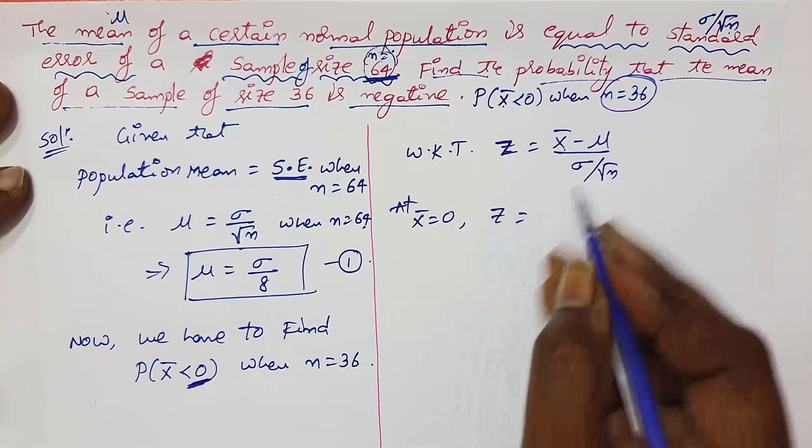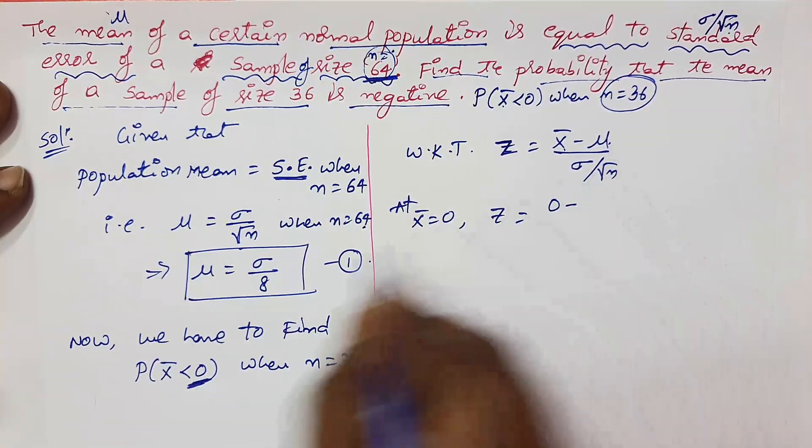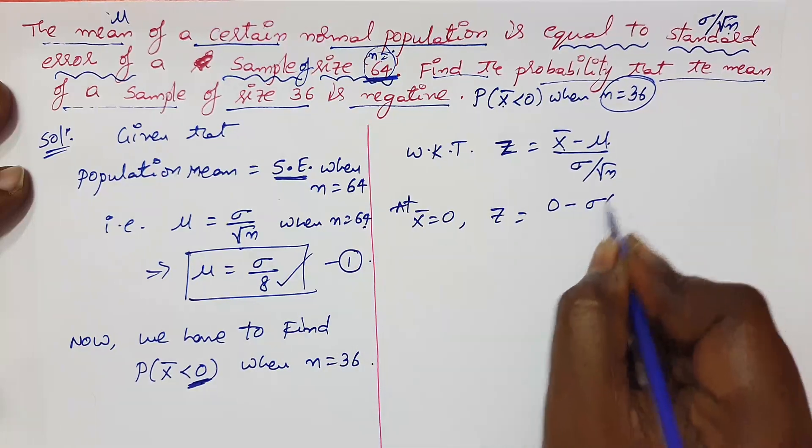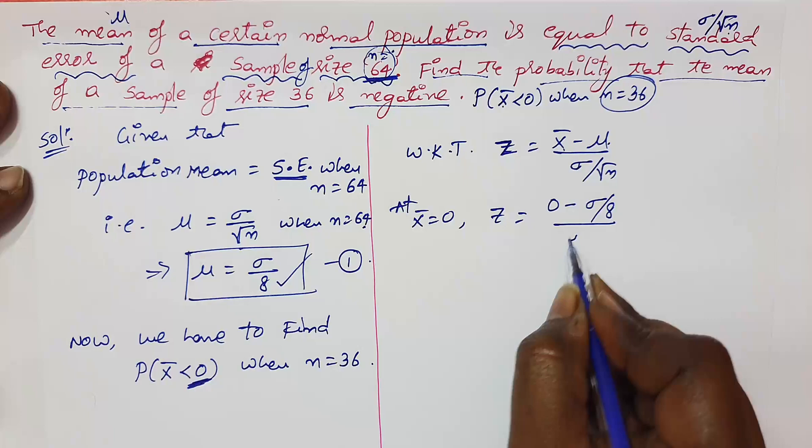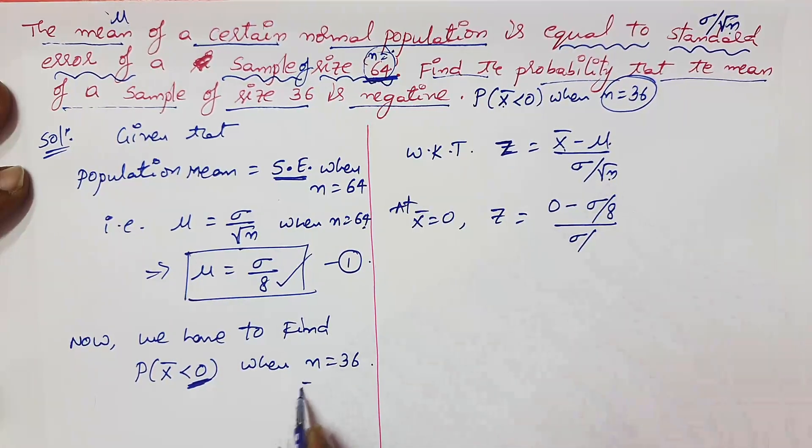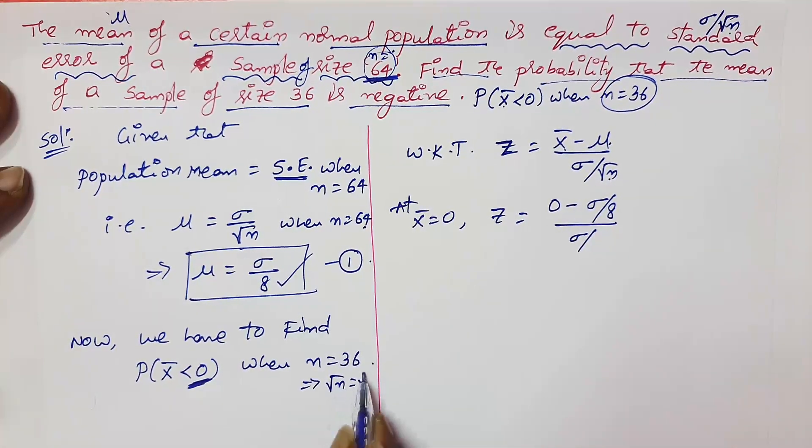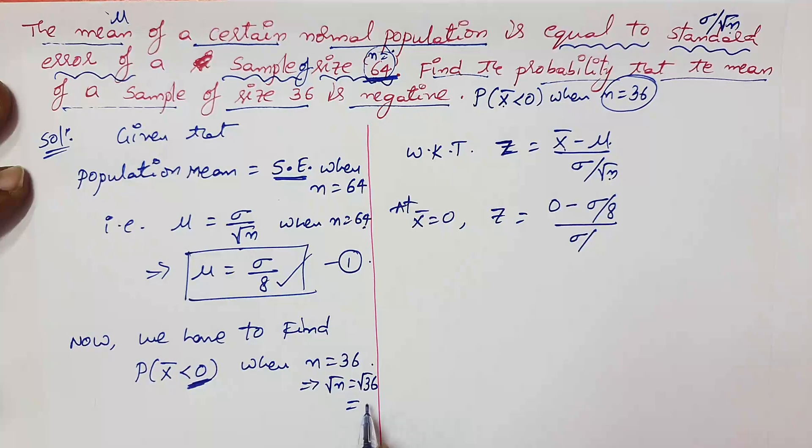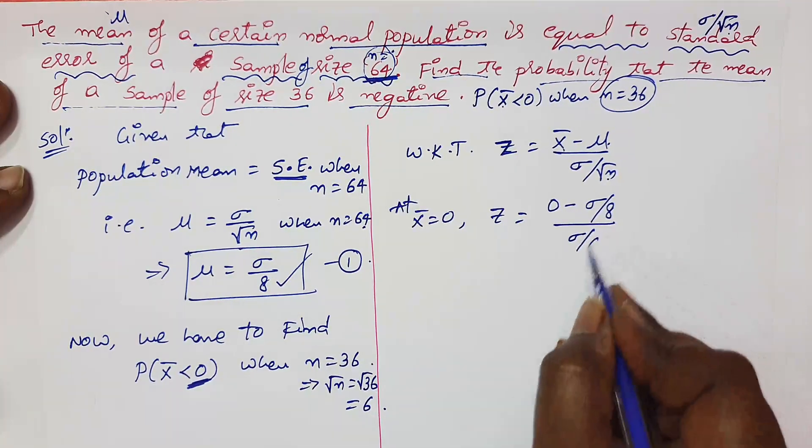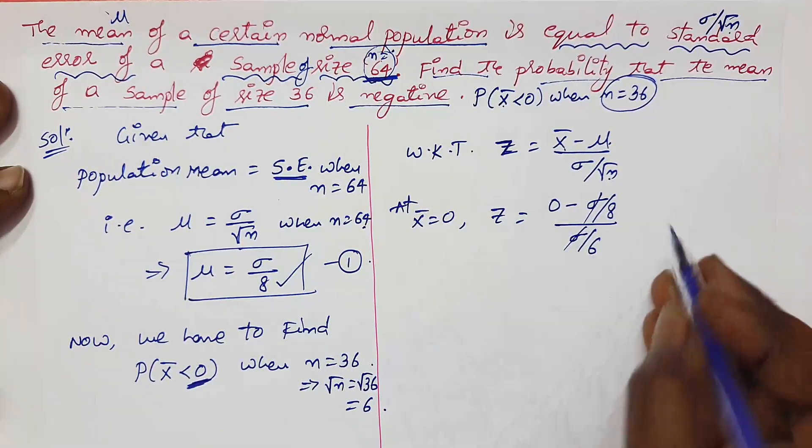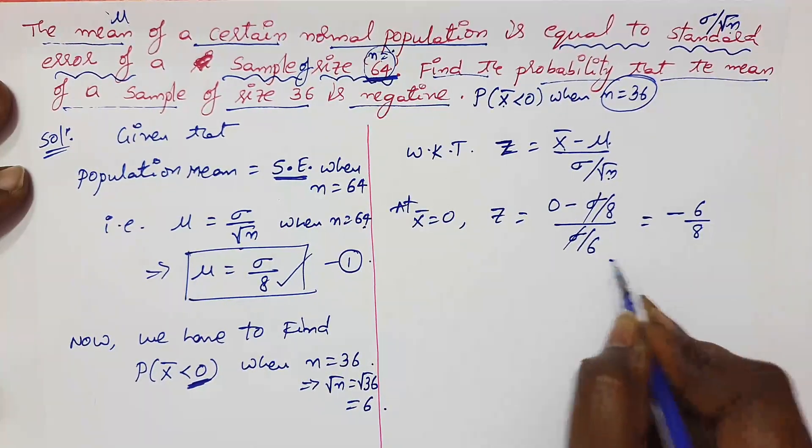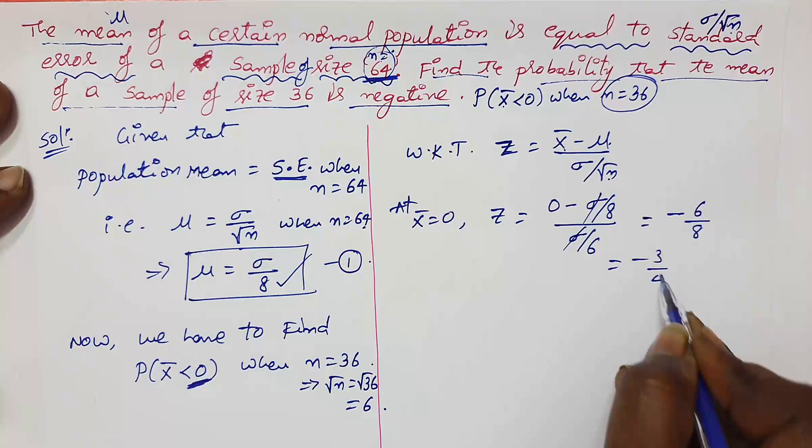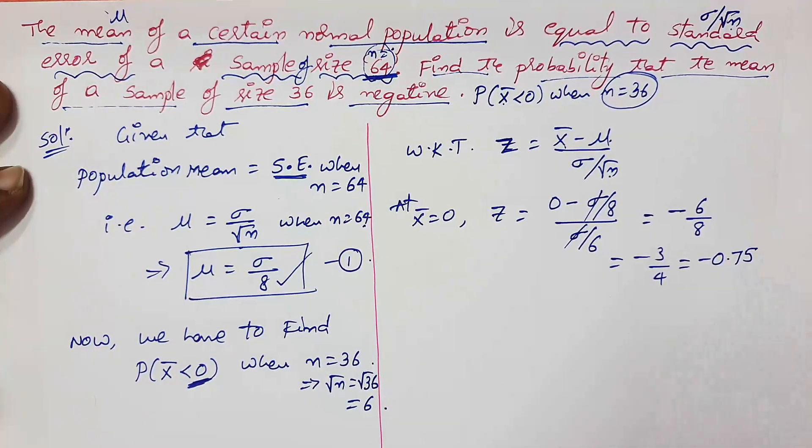0 minus what is mu? Mu is given as sigma by 8. What is sigma by root n? Sigma by root 36, which would be 6. So sigma gets cancelled and this can be written as minus 6 by 8, which would be minus 3 by 4, or minus 0.75.